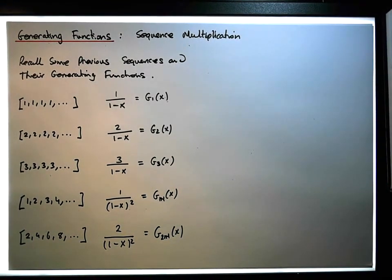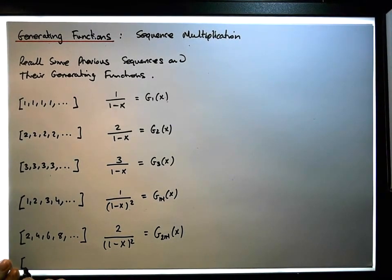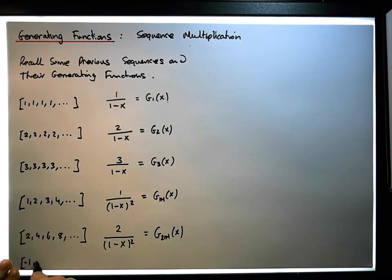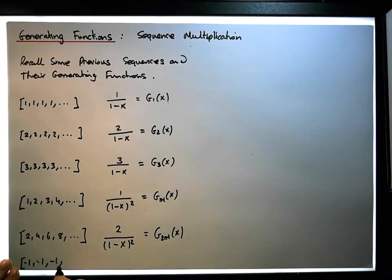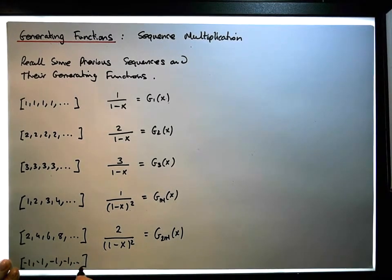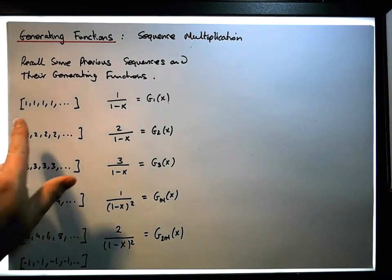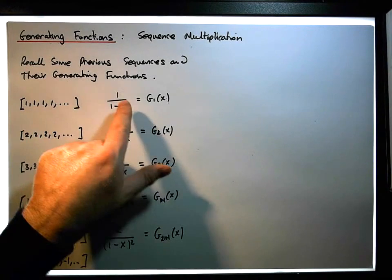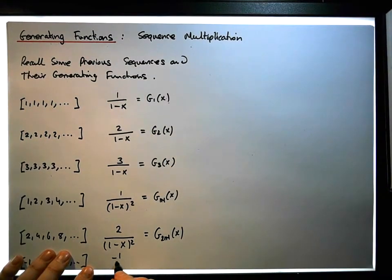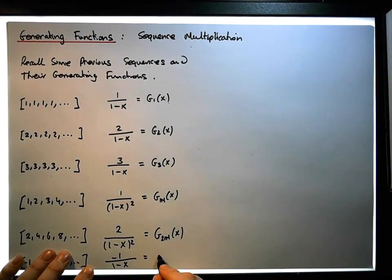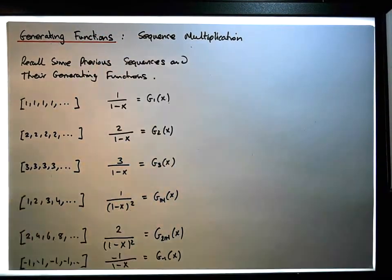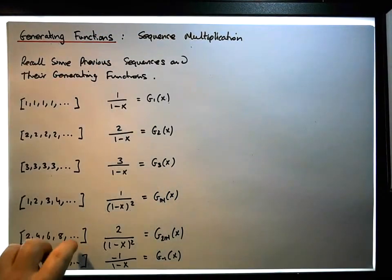And then another one we had was all negative numbers: −1, −1, −1, −1, ..., simply the constant sequence multiplied by minus one. So the generating function is −1/(1 minus x), and that gives us g₋₁(x). So those are some familiar sequences and their associated generating functions.